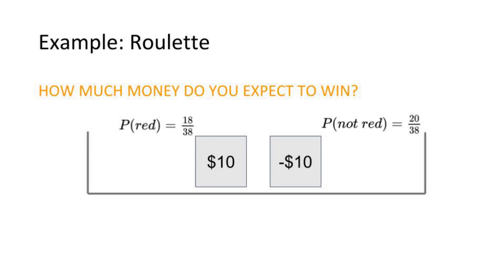The chance of winning $10 is 18 reds over 38 slots. And the probability of losing $10 is 20 slots over 38.